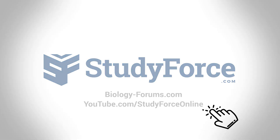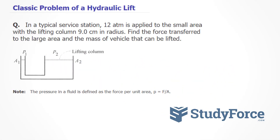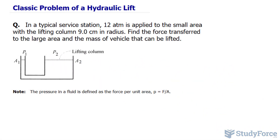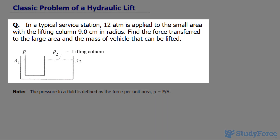In this lesson, we'll look at a classic problem involving a hydraulic lift. The question reads: in a typical service station, 12 atmospheres of pressure is applied to the small area with the lifting column 9.0 centimeters in radius. Find the force transferred to the large area and the mass of the vehicle that can be lifted.